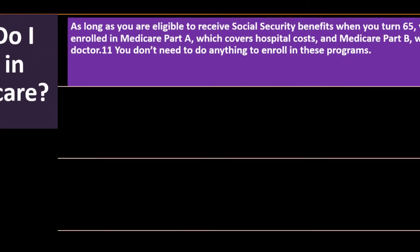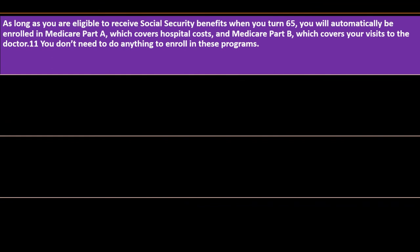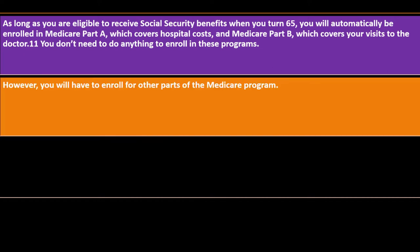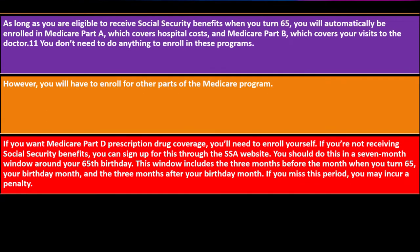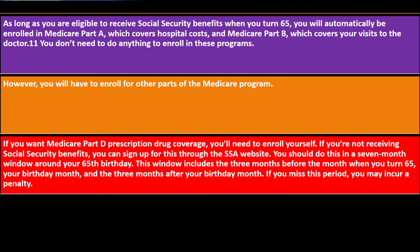How do I enroll in Medicare? As long as you are eligible to receive Social Security benefits when you turn 65, you will automatically enroll in Medicare Part A, which covers hospital costs, and Medicare Part B, which covers visits to the doctor. You don't need to do anything to enroll in these programs. However, you will have to enroll for other parts of Medicare. If you want Medicare Part D — prescription drug coverage — you'll need to enroll yourself through the SSA website.